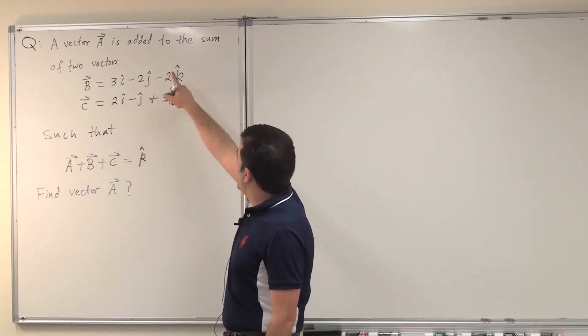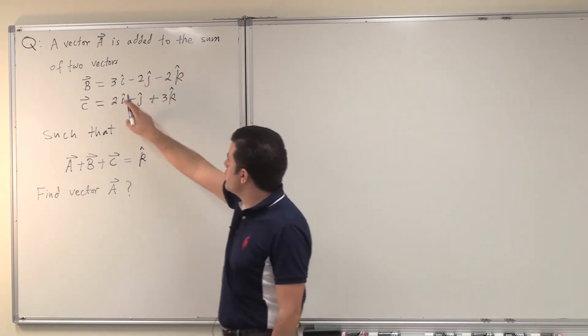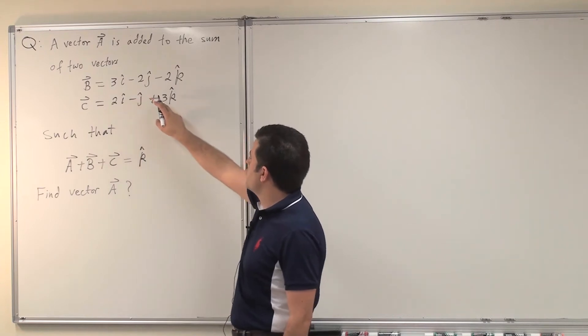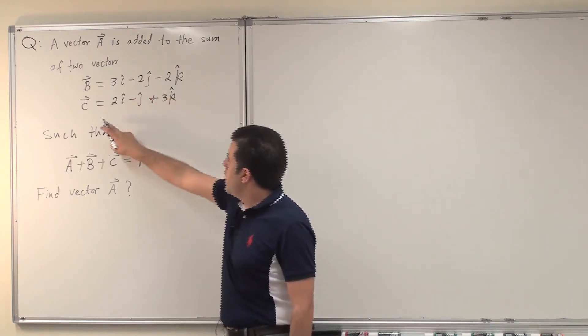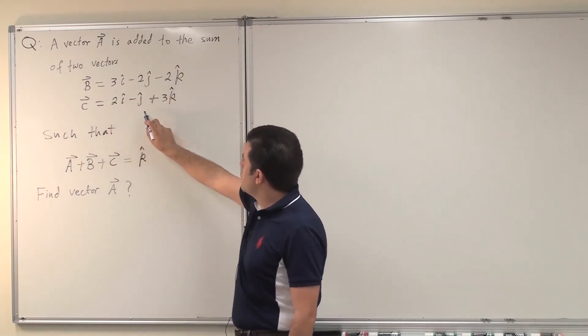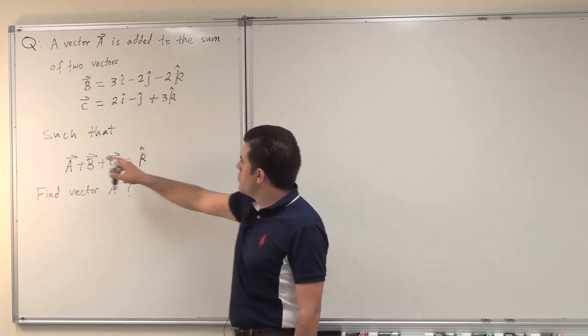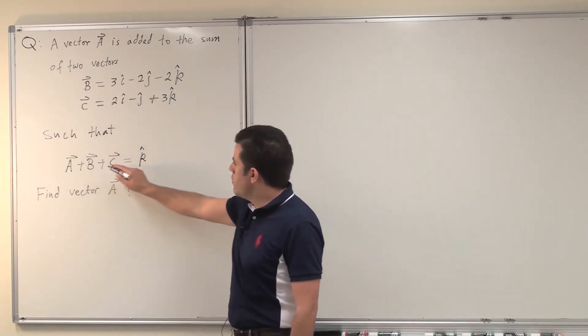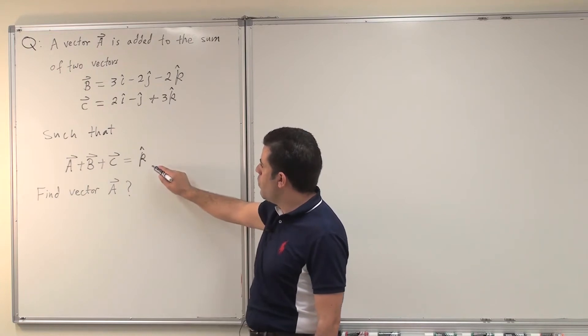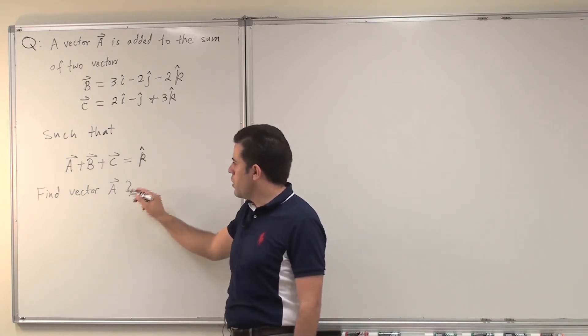A vector A is added to the sum of two vectors: B, 3i-hat minus 2j-hat minus 2k-hat, and C, 2i-hat minus j-hat plus 3k-hat, such that A plus B plus C equals k-hat. Find vector A.